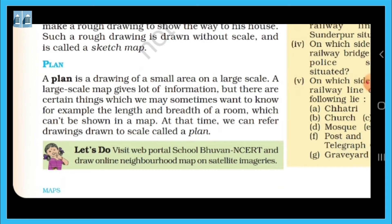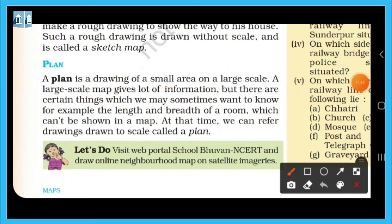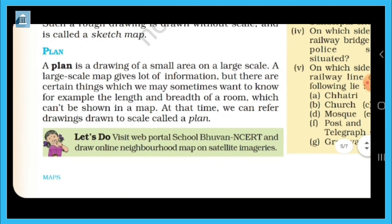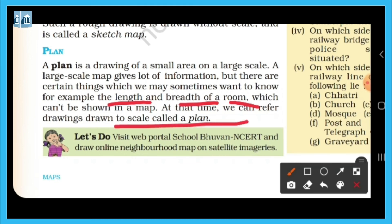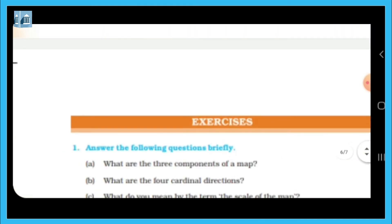Now, Plan. A plan is a drawing of a small area on a large scale. A large scale gives a lot of information. For example, the length and breadth of a room cannot always be shown on a regular map. At that time, we can refer to a plan. So, when you need such detailed measurements, you need to make a plan.